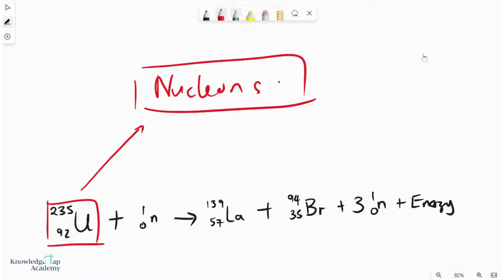So, in order for this to happen, what we need is the binding energy of the uranium. Or let's just call this binding energy of the reactants. You need to provide that to break the uranium up first.